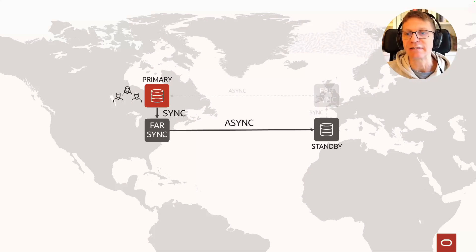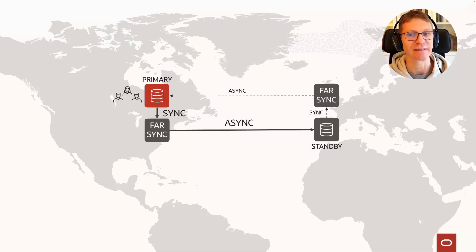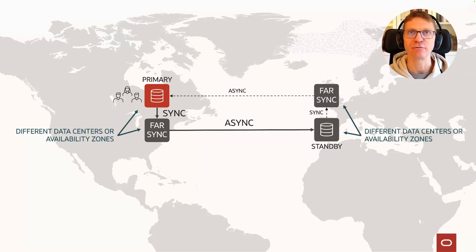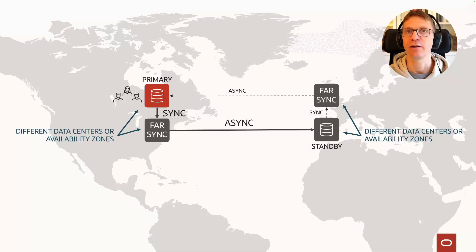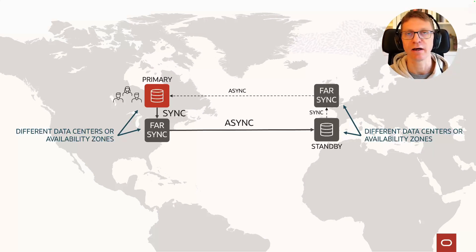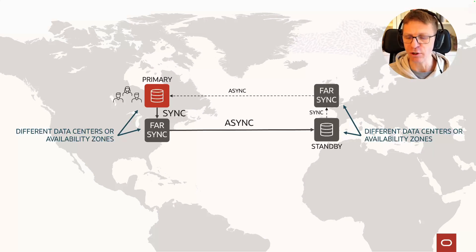Similarly to a standby database, you will also require a Farsync instance that protects synchronously the standby database when you switch over your workload from the primary to the secondary site. We recommend placing the Farsync instance close enough to have low latency that does not impact application performance, but distant enough not to suffer from the same outage as the primary database — for example, a nearby data center, a nearby server room, or a different availability zone.